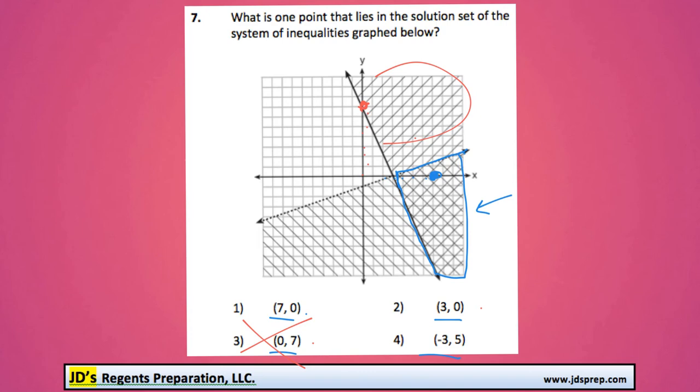(3, 0) is right here. Now, that's really close, but you'll notice that this is a dotted line, so the point can't be on it.